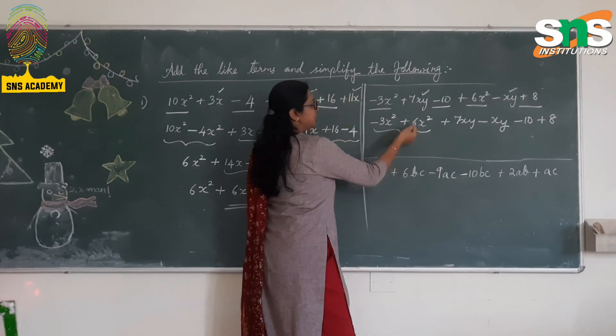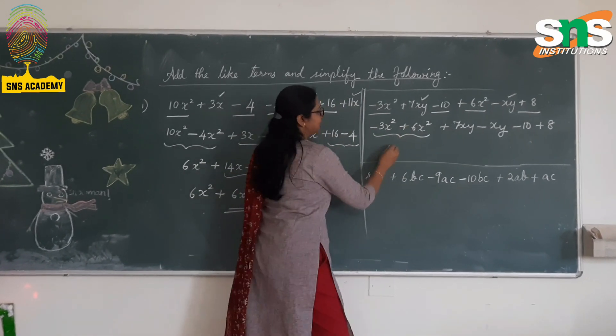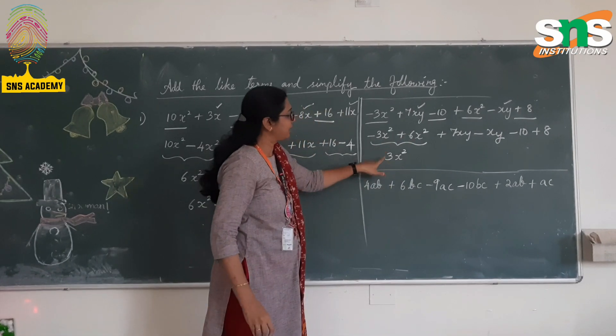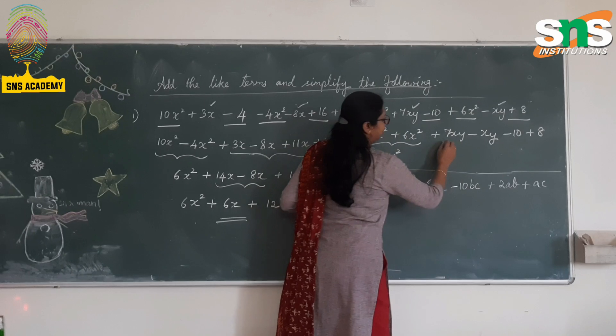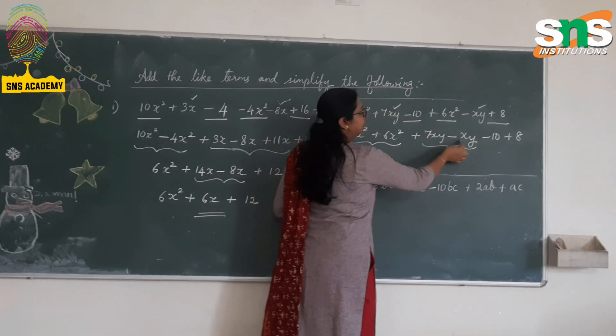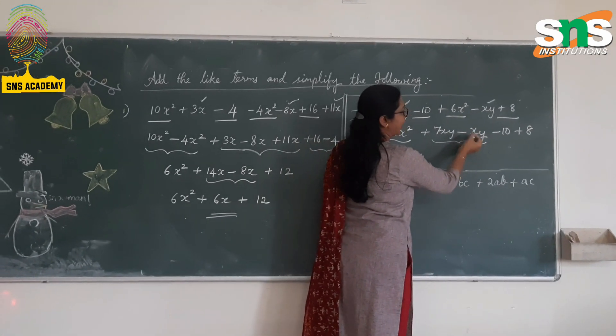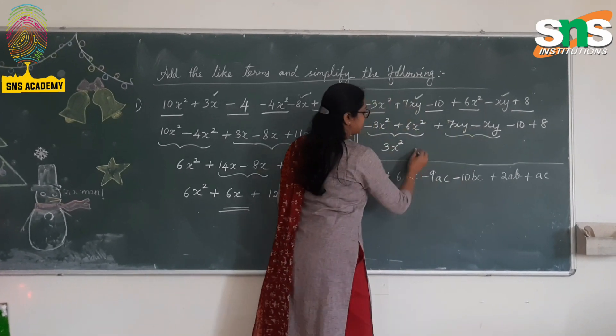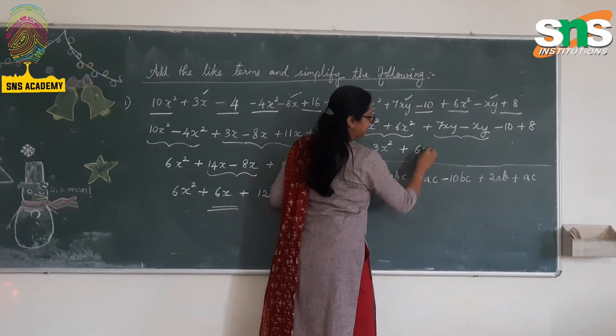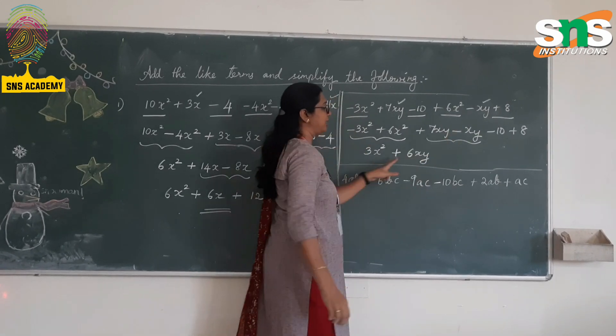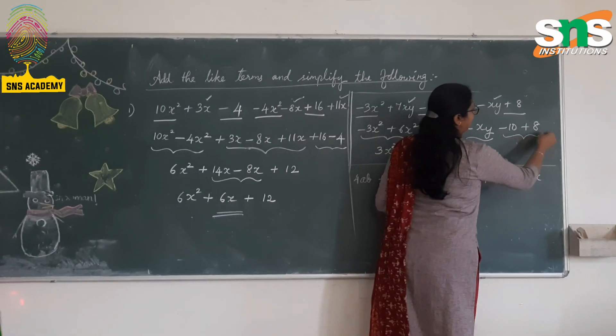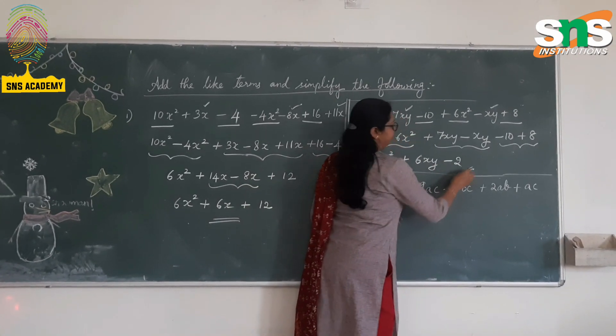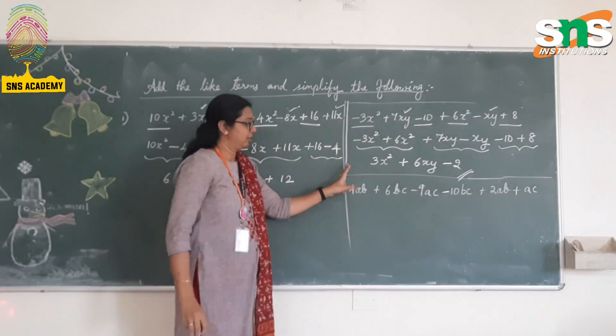Now we are simplifying them. 6 - 3 it is positive 3x². Different side subtract into the greater number side. Then here it is 7. The coefficient of xy is negative 1. When there is no number here you have to take it as 1. So 7 - 1 is 6, so positive 6xy. And finally, -10 + 8 is going to be -2.